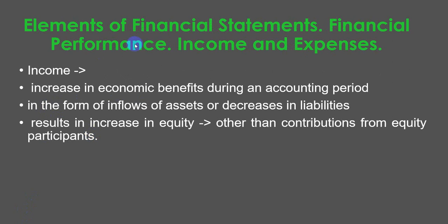Let's start the discussion of elements of the statement of profit or loss and other comprehensive income, also known as elements of financial performance. They are income and expenses. Income is an increase in economic benefits during an accounting period in the form of inflows of assets or decreases in liabilities, which results in an increase in equity other than contributions from equity participants.